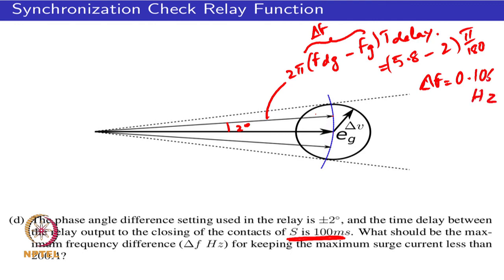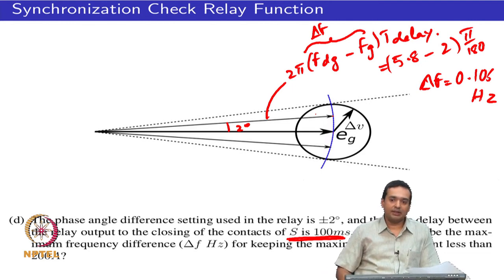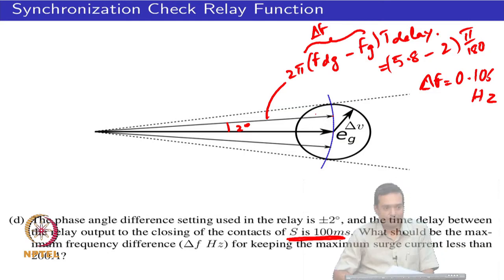So if the grid is at 50 Hz, the DG voltage must be kept between 49.9 Hz and 50.1 Hz to ensure the surge current during switch closing does not exceed 200 A, given that closing occurs at 2 degrees rather than 5.8 degrees. To close the switch safely, amplitudes, phase, and frequency must all be matched appropriately. In the next class, we will discuss problems related to the economics of DG operation to help with engineering design.